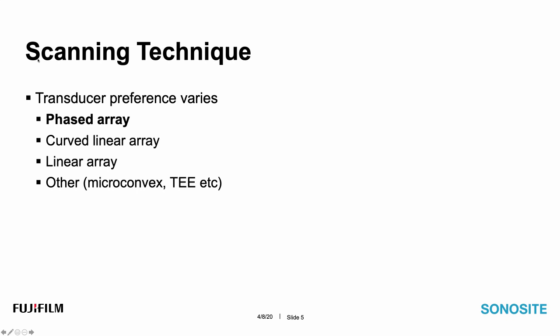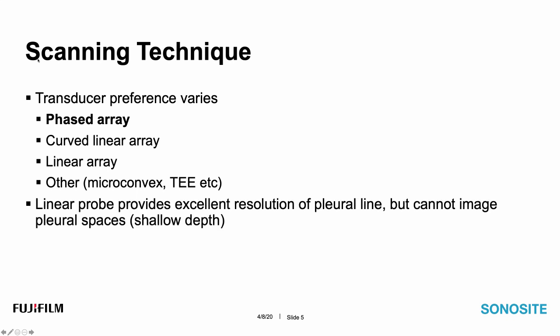The linear array, given its near-field range, is excellent with near-field resolution; however, it lacks the depth to image the pleural spaces. Other transducers including the microconvex or the transesophageal transducer are used by some as well. While the linear probe provides excellent resolution of the pleural line — which is of interest in the COVID patient — because of its limitations imaging deeper into the chest and pleural spaces, I would generally discourage you from using it for the COVID-19 patient.